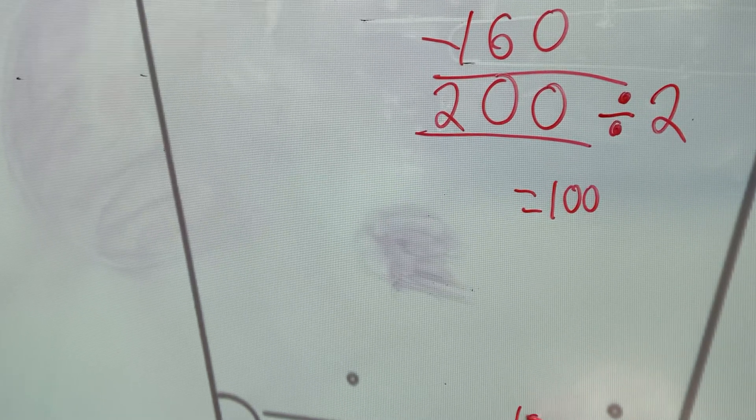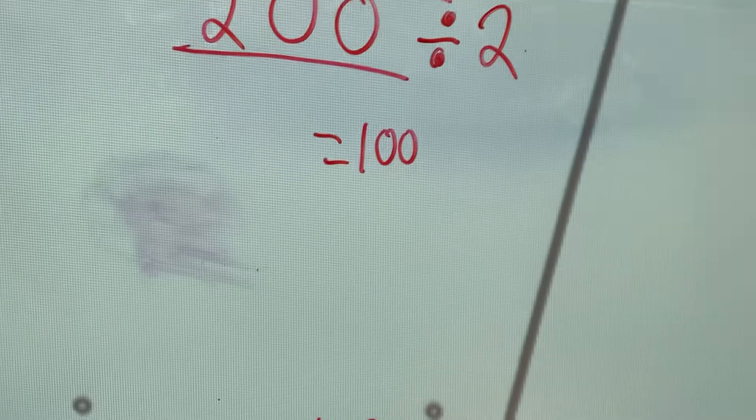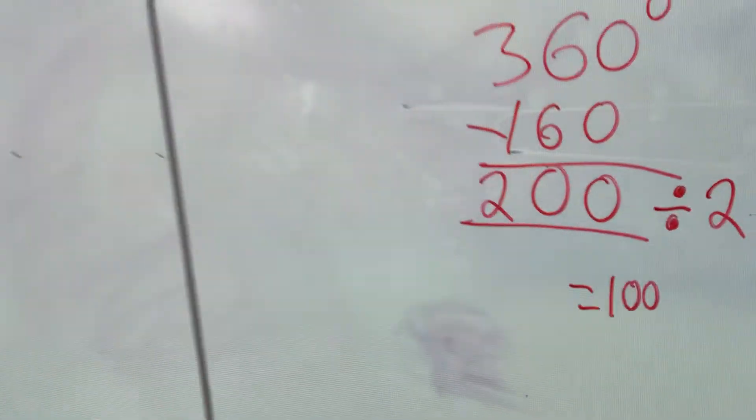So without even measuring, this is telling me this is 100 degrees. If this one is 100, this one must be 100. But let's double check just to prove that we are correct. So we can't just assume.